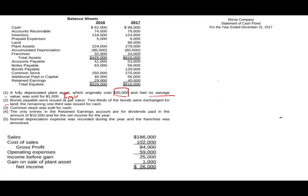Item two: bonds were issued at par value — two-thirds of the bonds were exchanged for land, and the remaining one-third was for cash. This affects both the investing and financing sections. Item three: common stock was sold for cash — that's a financing transaction. Item four: the only entries in retained earnings are for dividends paid of $10,000 and net income for the year. Item five: normal depreciation expense was recorded and the franchise was amortized.